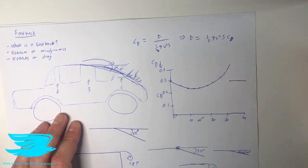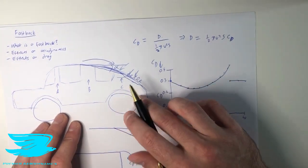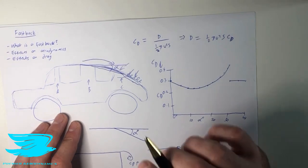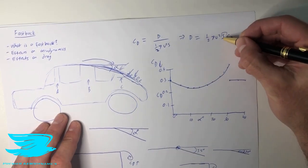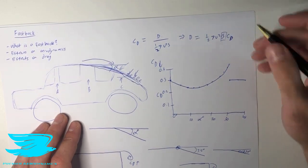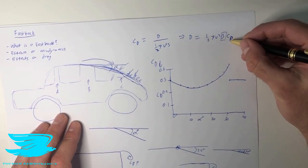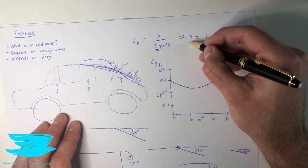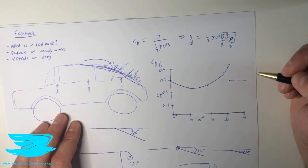So if the drag coefficient drops, that's great. The drag will drop as well. But the fastback also has another very beneficial effect on drag potentially. And this is by reducing the frontal area if you design it properly. So you could get a double reduction in drag simply by having the drag coefficient dropping, but also the frontal area dropping as well, which would then make the drag drop quite a lot.